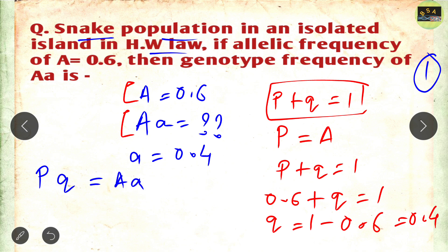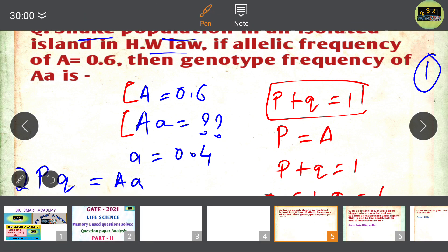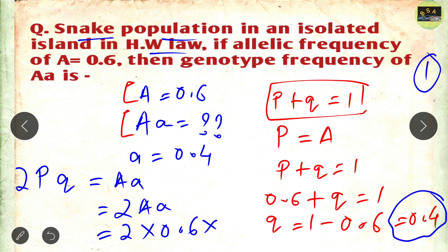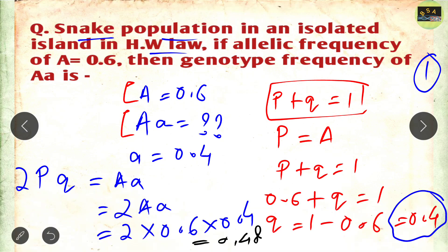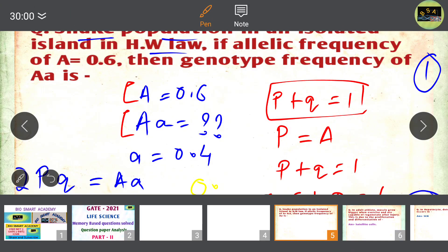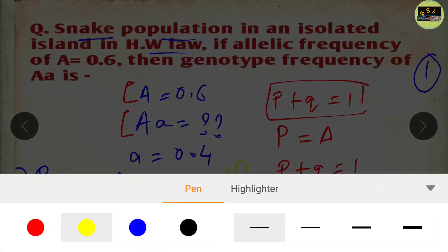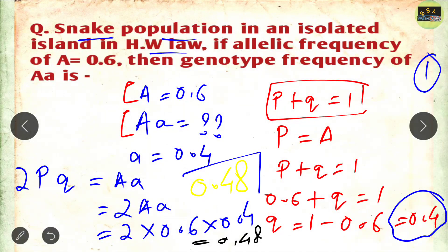We know that 2pq equals capital A small a. Therefore: 2 × 0.6 × 0.4 = 0.48. The final answer is 0.48. So the allelic frequency of the heterozygous capital A small a is 0.48.